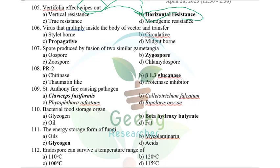A virus that multiplies inside the body of the vector is a propagative type — they multiply inside the vector body and transfer the disease. Such transmission is called propagative type.